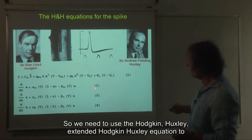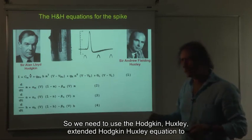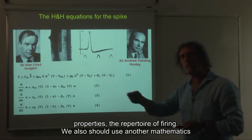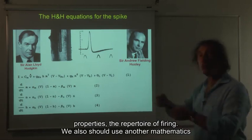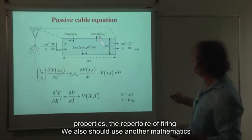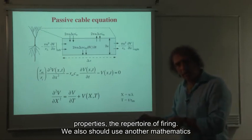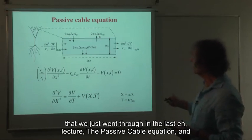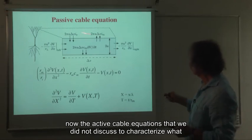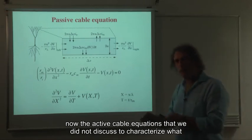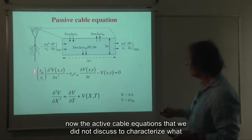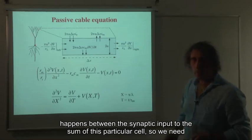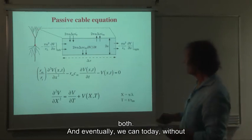So we need to use the Hodgkin-Huxley, extended Hodgkin-Huxley equation, to capture the spike and the repetitiveness, the different types of spiking properties, the repertoire of firing. We also should use another mathematics that we just went through in the last lecture, the passive cable equation, and now also the active cable equations to characterize what happens between the synaptic input to the soma of this particular cell.